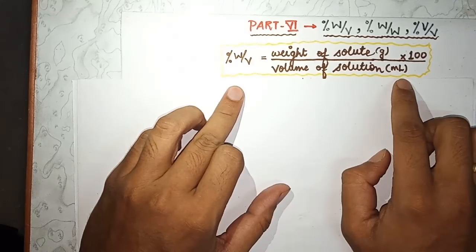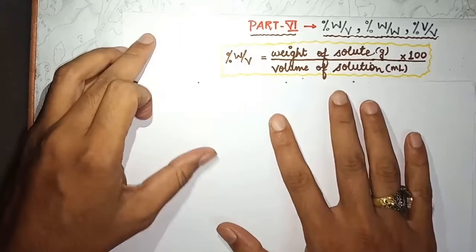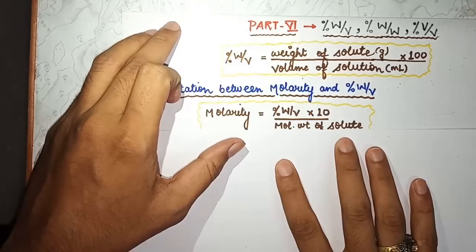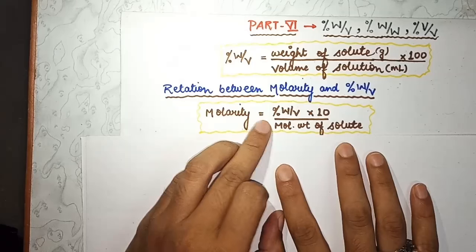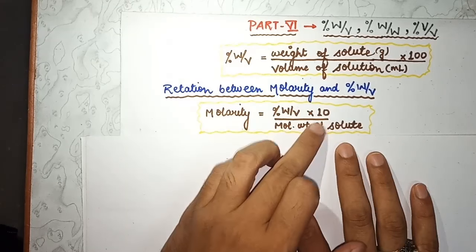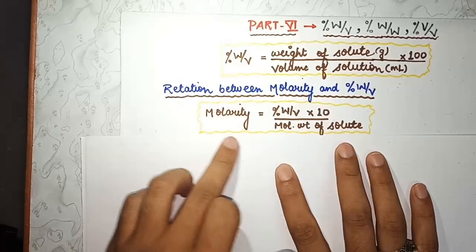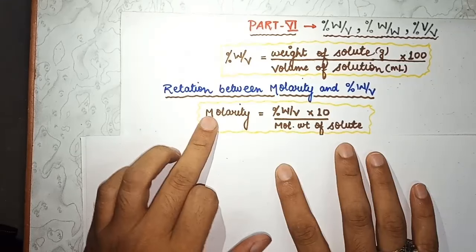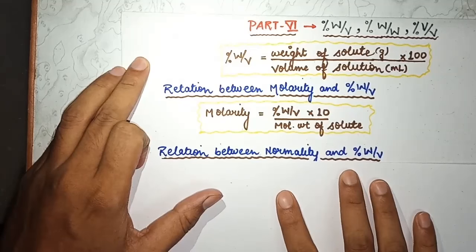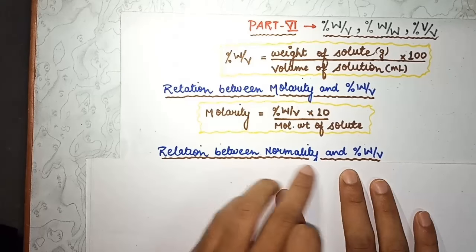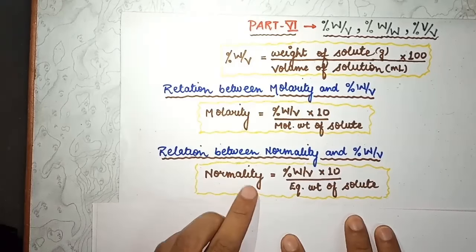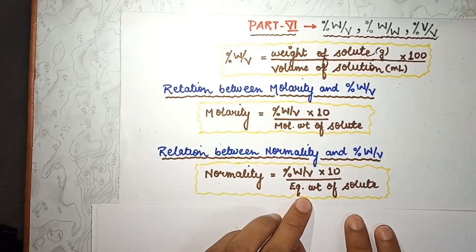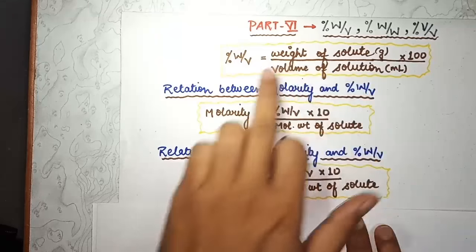Now what is the relationship between molarity and percentage weight by volume? Molarity is equal to percentage weight by volume multiplied by 10, divided by molecular weight of solute. Similarly, the relation between normality and percentage weight by volume is: normality is equal to percentage weight by volume multiplied by 10, divided by equivalent weight of solute.